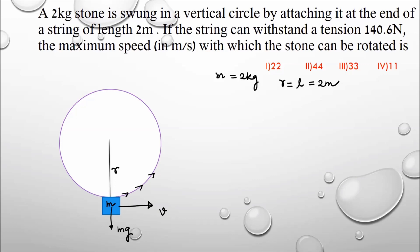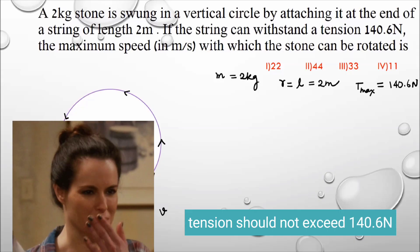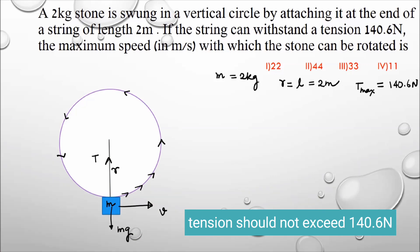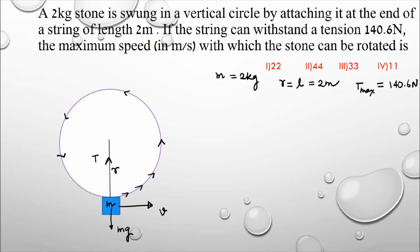The question says: if the string can withstand a tension of 140.6 newtons, what is the maximum speed with which the stone can be rotated? This means the maximum tension the string can withstand, T_max, is 140.6 newtons. At no point during the vertical circular motion should the tension exceed this value. So we need to find at what point in the vertical circle the tension is going to be maximum.